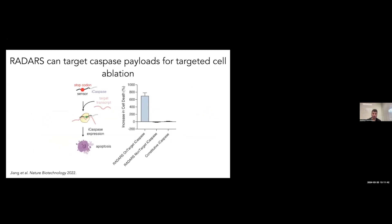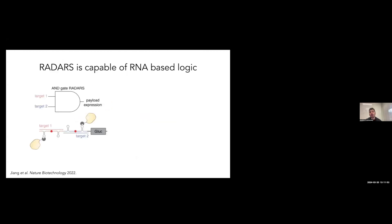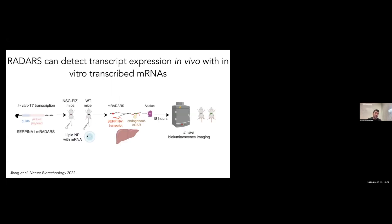Lastly, we can target things like caspases to cells to ablate them. Here we can actually eliminate a cell based on its expression—we can turn on and have massive increases in cell death. We can do a logic-based system where we can use AND gates. By coupling RADARS together, we can sense two targets and create an AND gate that requires the expression of both targets to turn on expression.